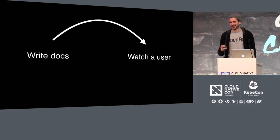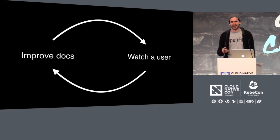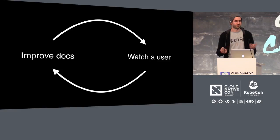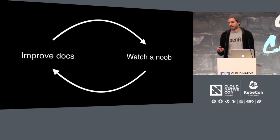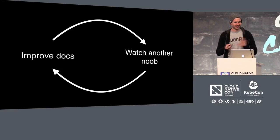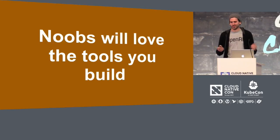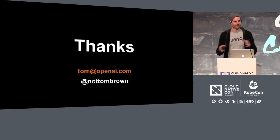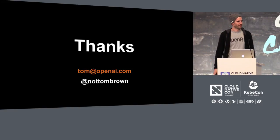Basically, write your docs, watch a user, and then repeat that. What we try to do at OpenAI is make sure that any product we build isn't finished until any new user can figure out how to do the key workflows with just 10 minutes of reading the docs. The practice for that is just watch a noob do it, then watch another noob. If you follow these simple things, you'll end up building tools that noobs really will love. Thank you, I'm Tom Brown. If you want to learn more about building products for particular research, feel free to email me at Tom at OpenAI.